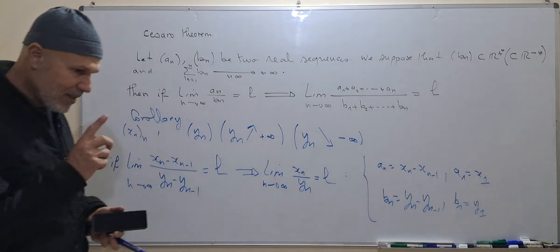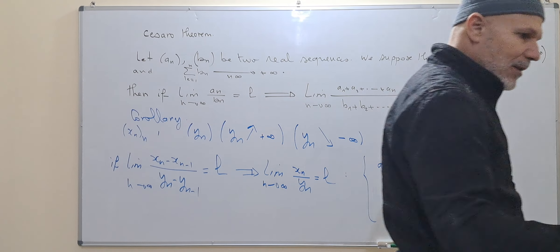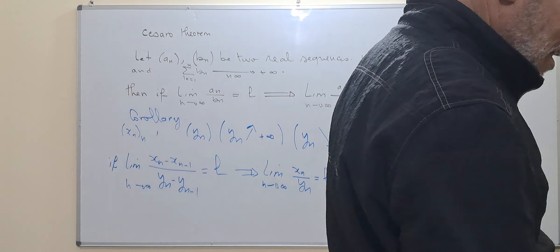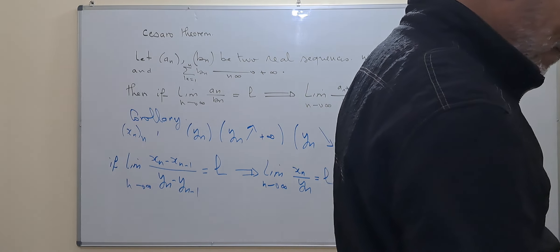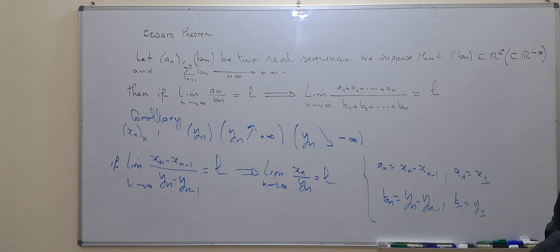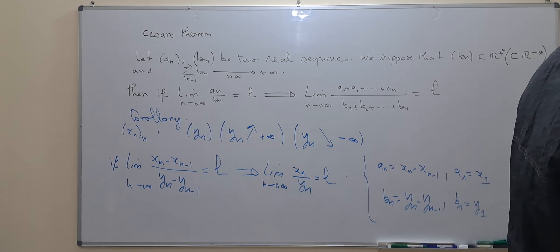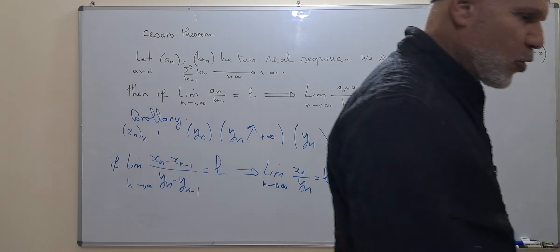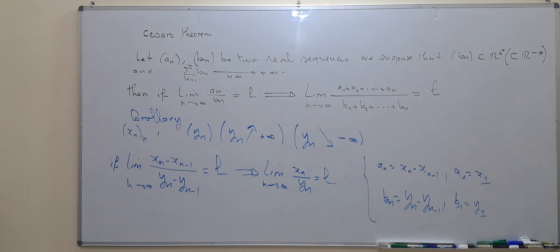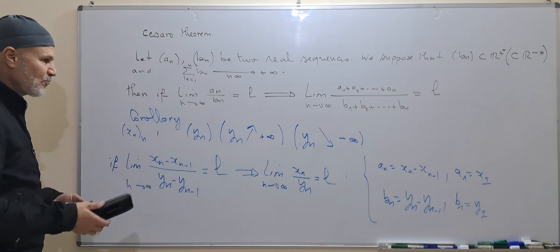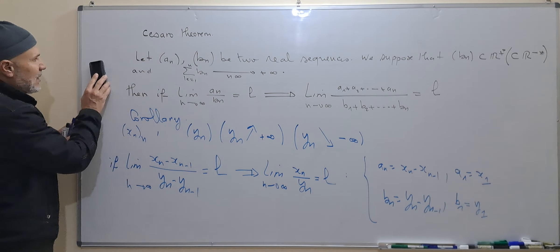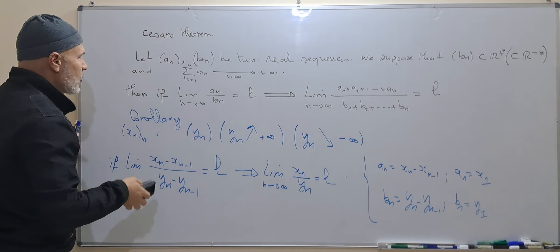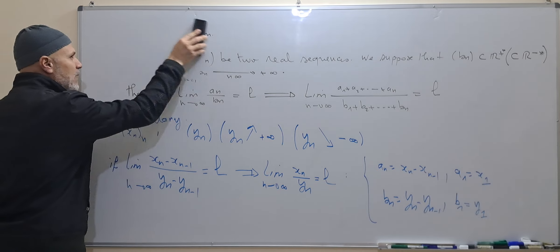This is the arithmetic form of the Stolz-Cesàro theorem. I am also uploading a video on limit superior and limit inferior, which will be online in a few weeks.